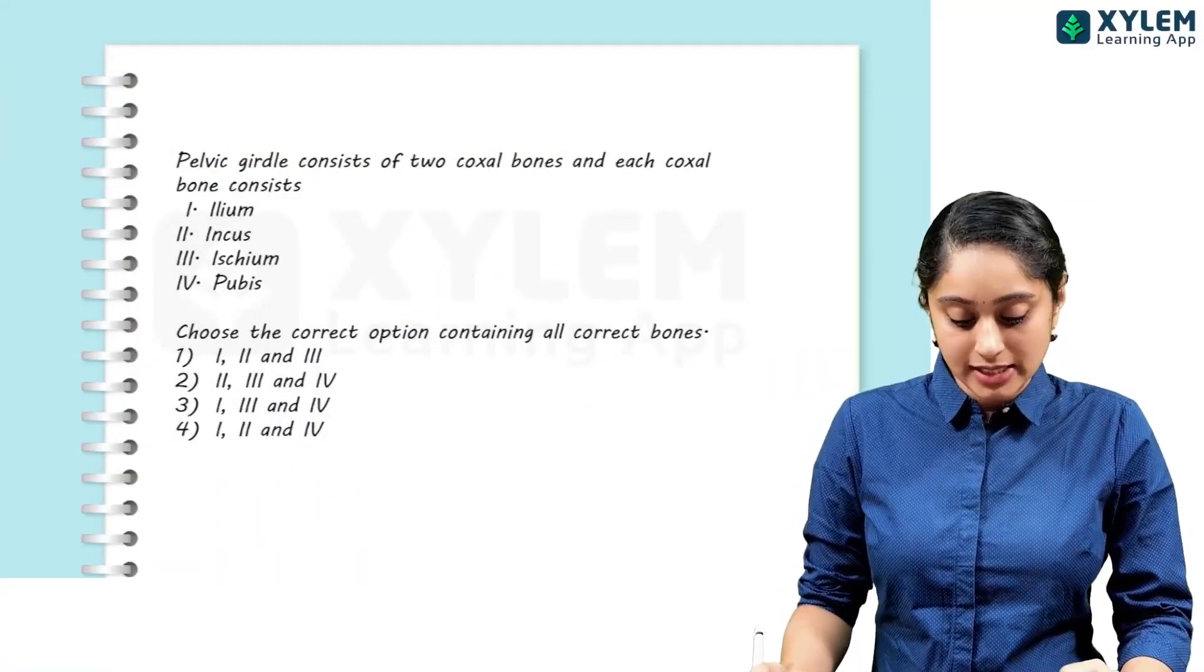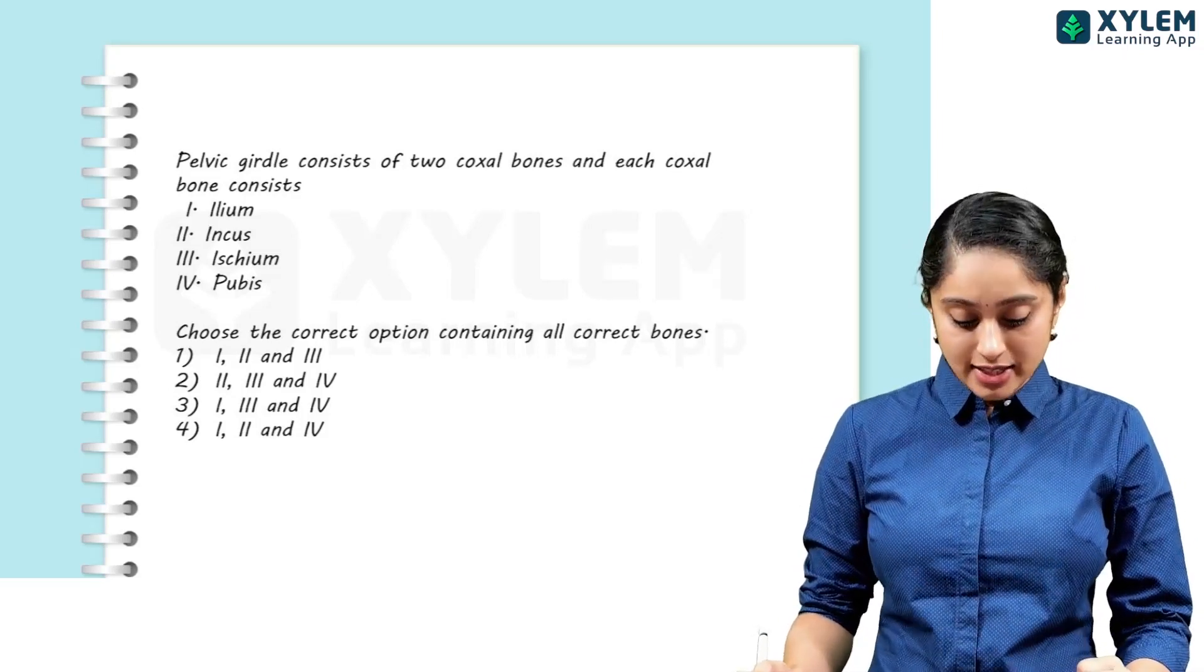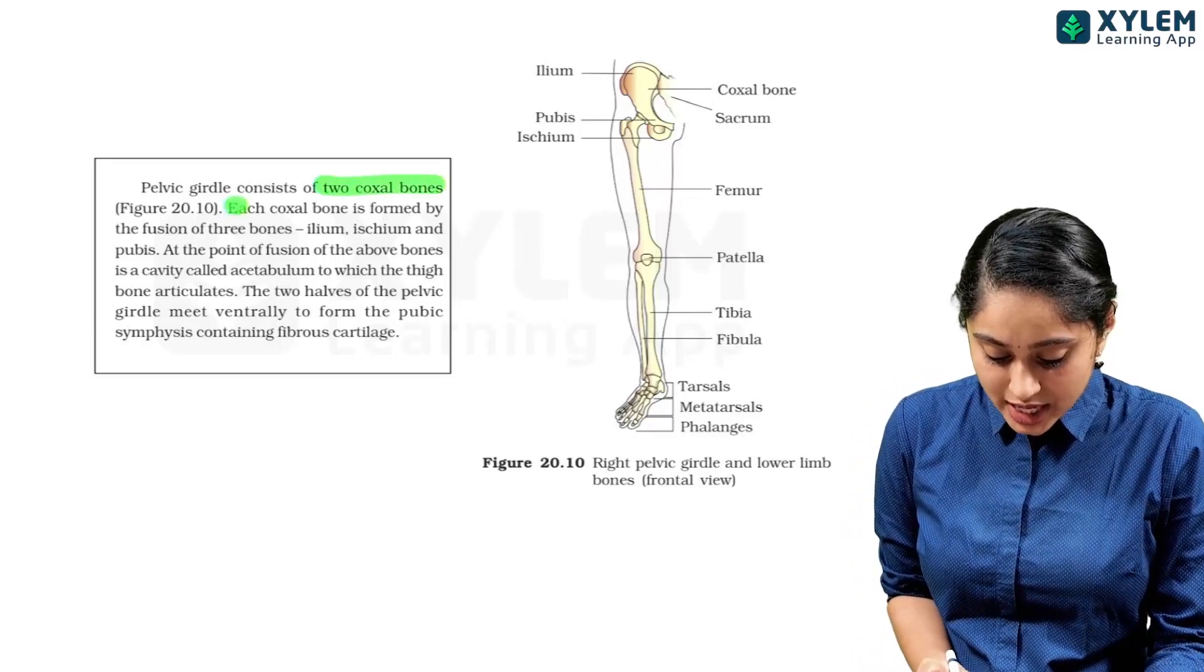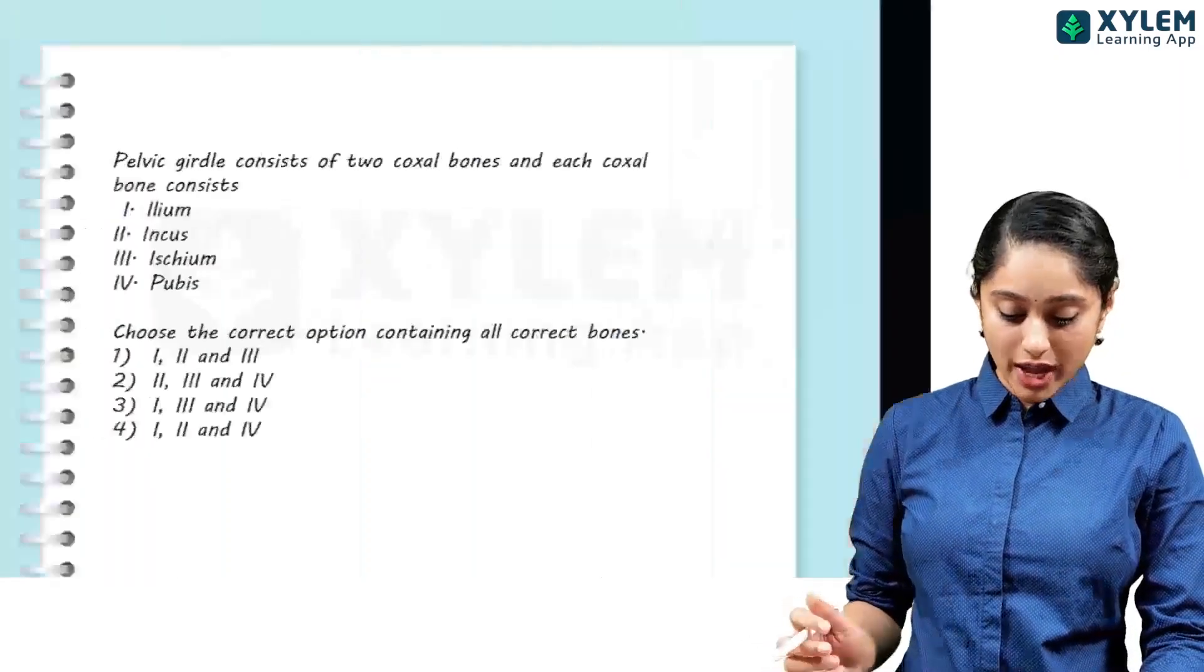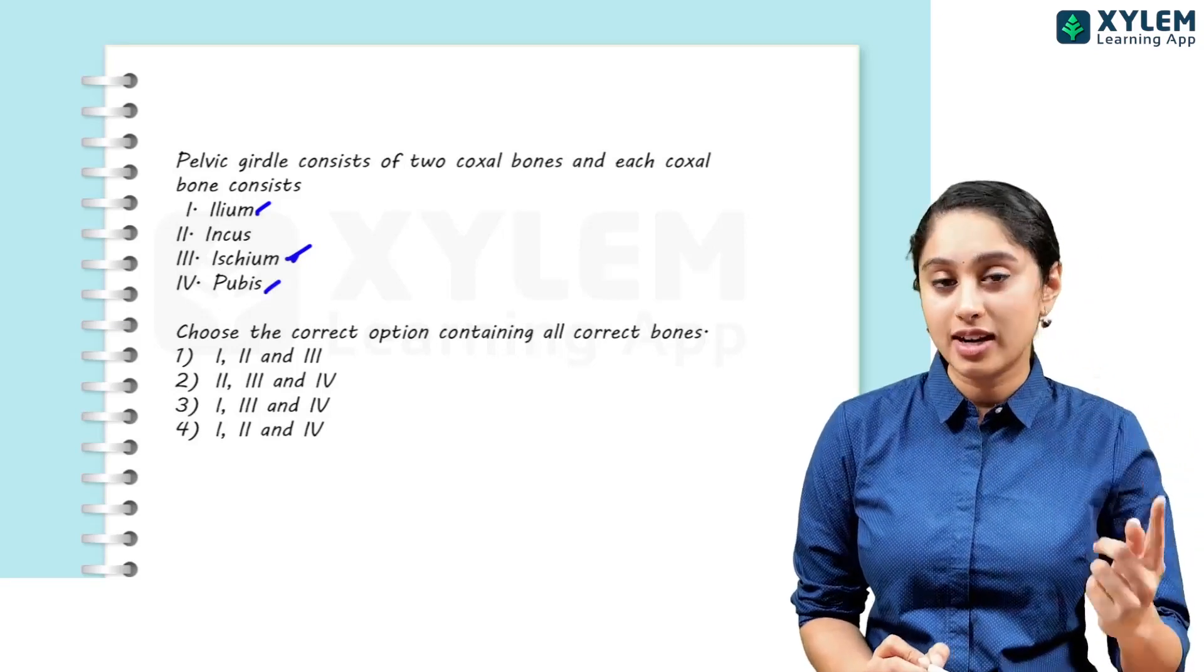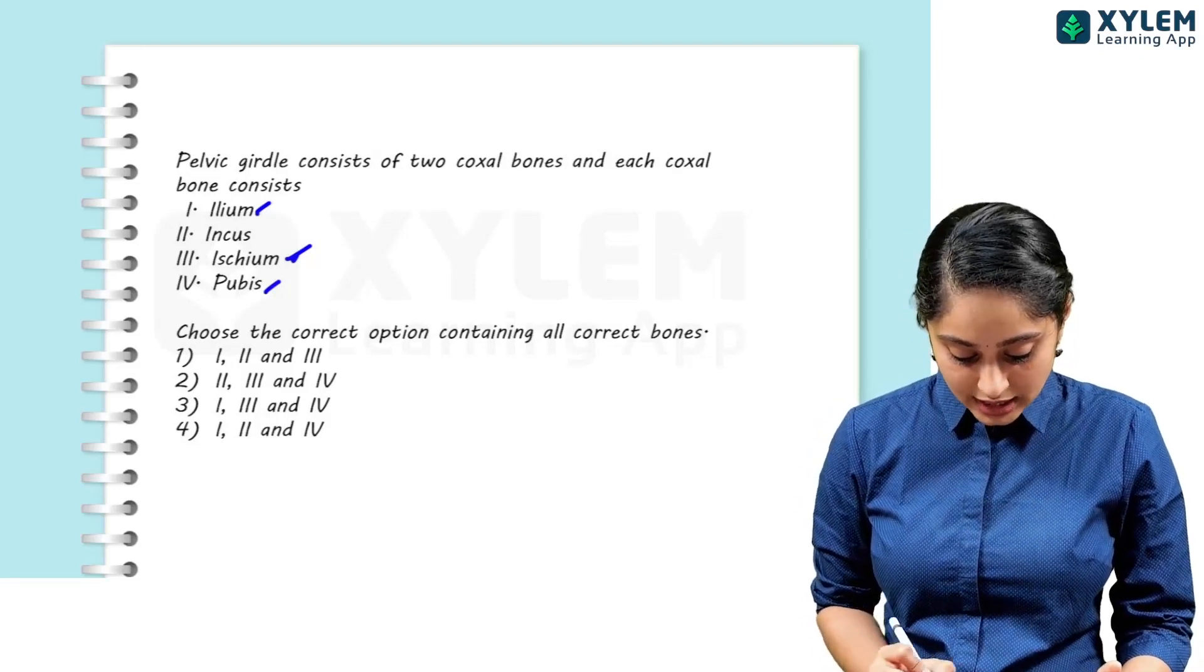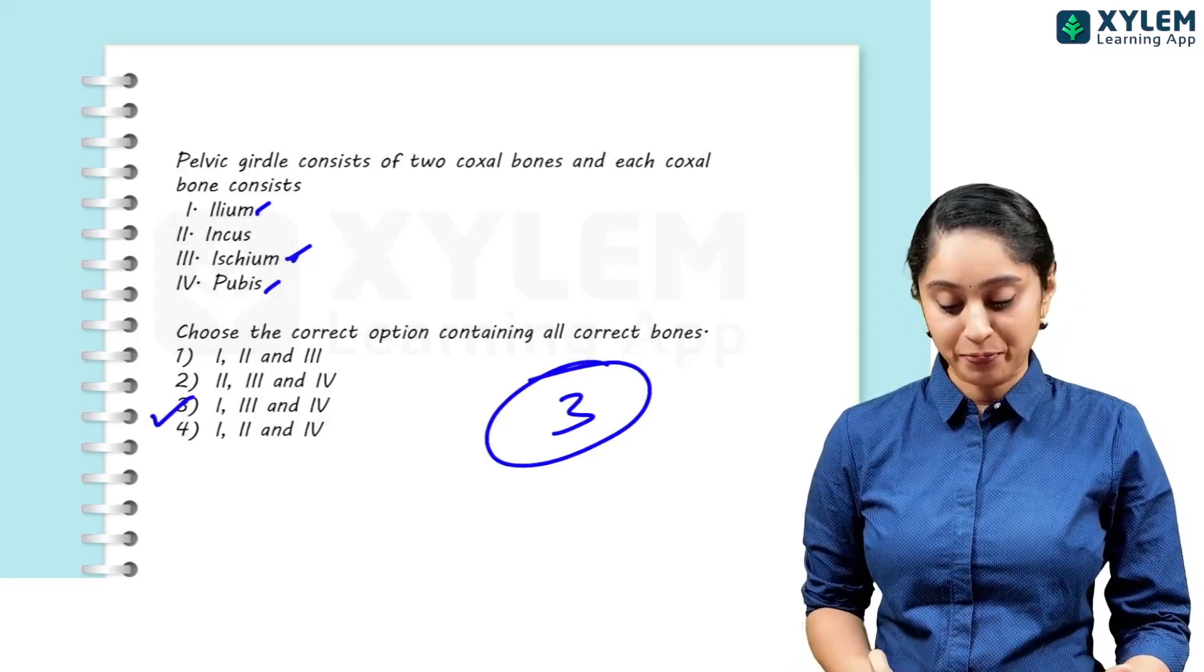The pelvic girdle consists of two coxal bones and each coxal bone consists of what? This is the ileum, incus, ischium and pubis. If you see here, each coxal bone has one ileum, ischium and a pubis. So that is why, ileum, ischium, pubis - incus is wrong. So 1, 3 and 4 belongs to the coxal bone of the pelvic girdle. Option 3 will be my correct answer.